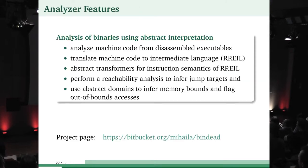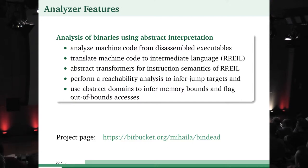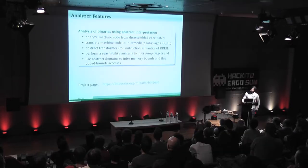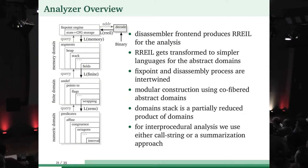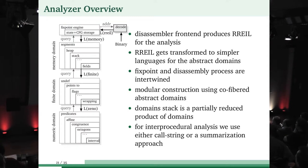Our analyzer works on binaries, not source code. We disassemble the executable, translate it to an intermediate language, apply the abstractions and transformers I showed, and check if reads or writes are within bounds. The analyzer has many pluggable domains on the left, each capturing part of the program semantics. The more domains you use, the more complex and slower the computation — so it's built modularly. You can start with simpler analysis and add more complex abstractions as needed.